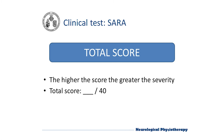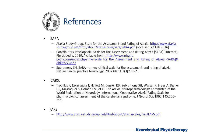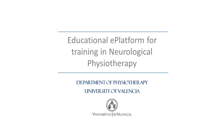To finish the test, the total score is calculated to determine the severity of the ataxia. It is rated from 0 — no ataxia — to 40 — more severe ataxia. Thank you for using this e-platform.